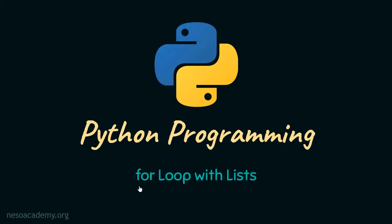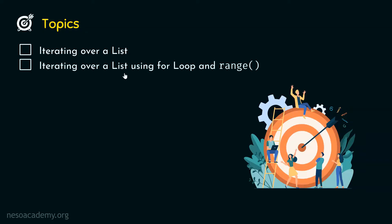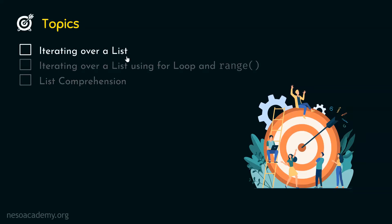In this presentation, we will understand how for loop works with lists. The first topic is iterating over a list using for loop. The second topic is iterating over a list using for loop and range function. The third topic is list comprehension. Let's get started with the first topic: iterating over a list using for loop.